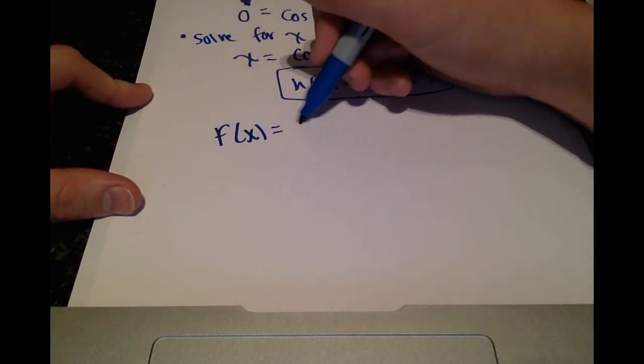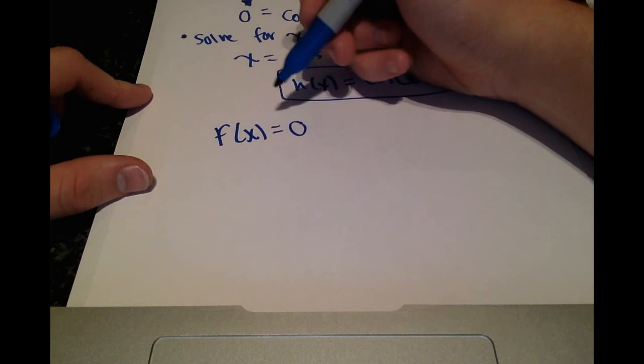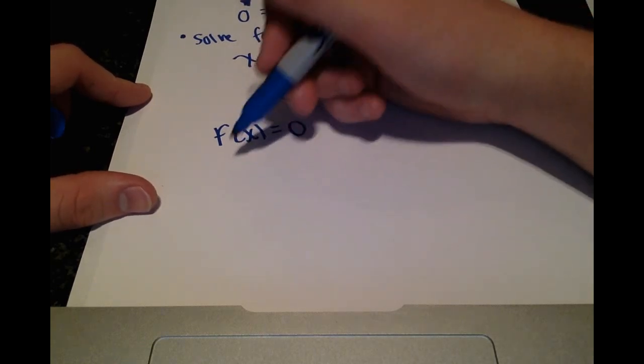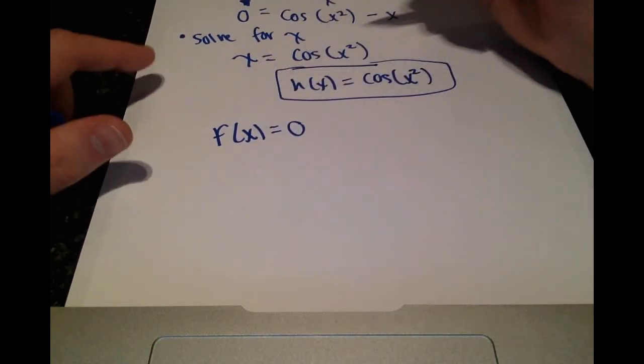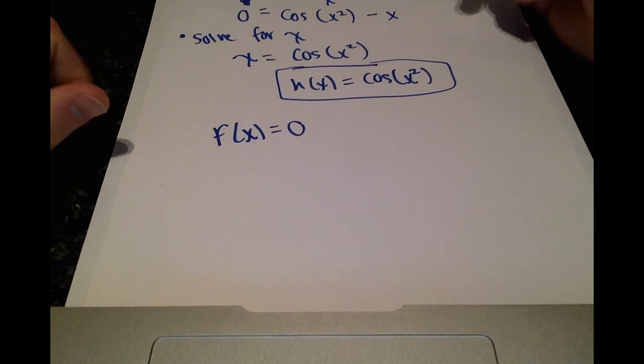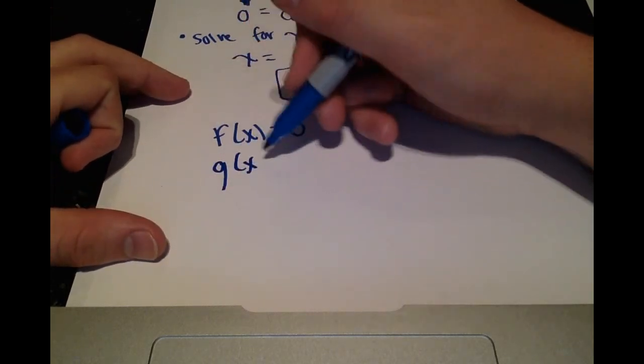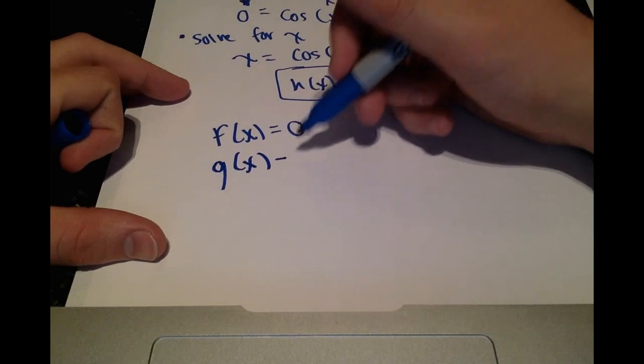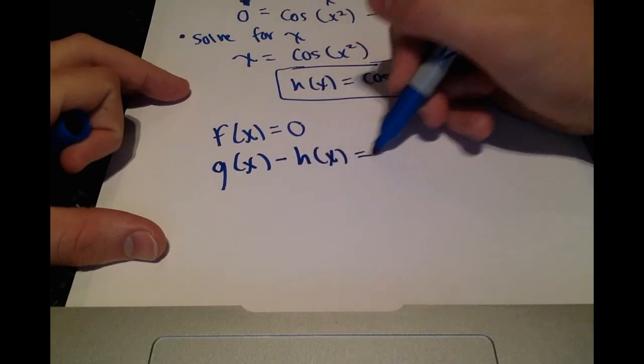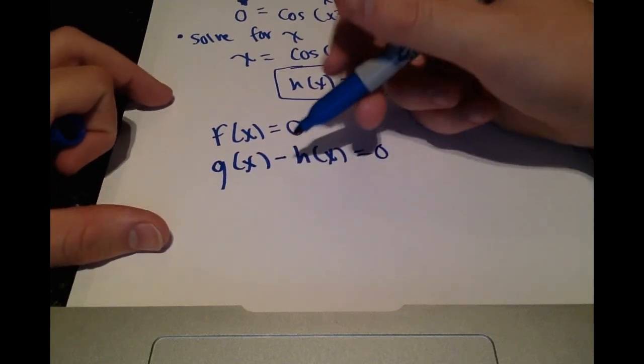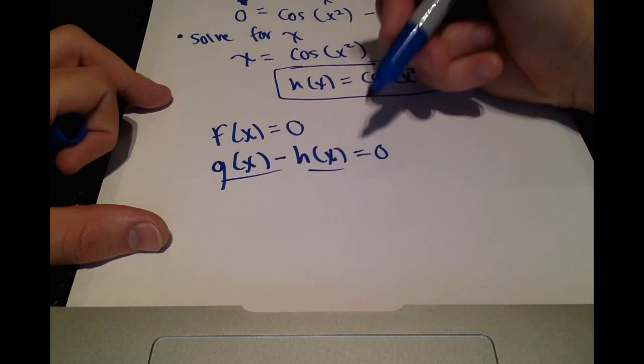So we ultimately want to find where f of x equals 0 because that's a root. And then when f of x equals 0, according to the way we split up f of x into g of x and h of x, then g of x minus h of x will equal 0. So if these values are equal and this is true,